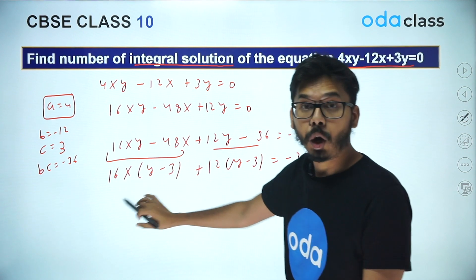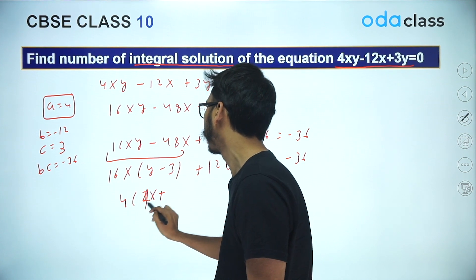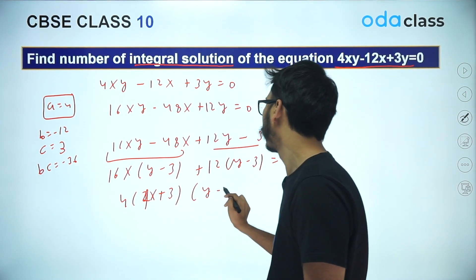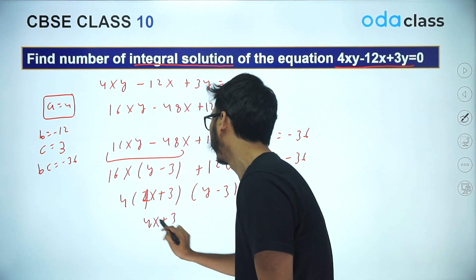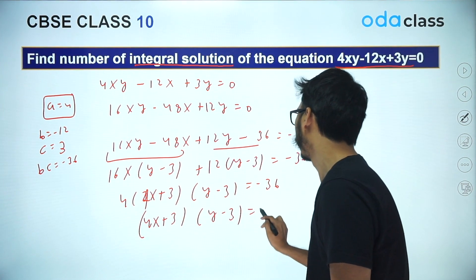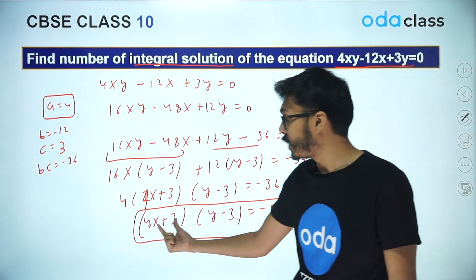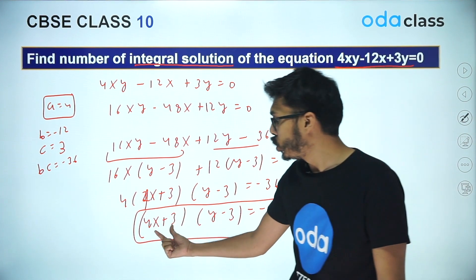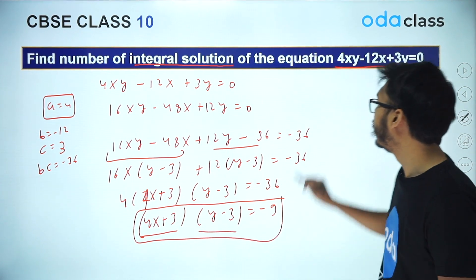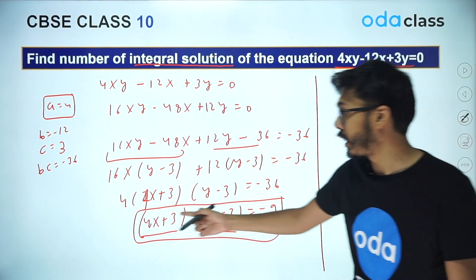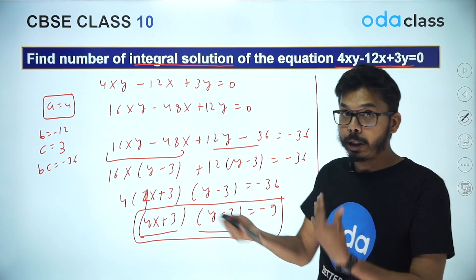From the first two terms you take 16X common and get Y minus 3; from the next two terms you take 12 common and also get Y minus 3. Taking Y minus 3 common from the whole expression gives (4X + 3)(Y − 3) equal to minus 36, which simplifies to (4X + 3)(Y − 3) equal to minus 9. Minus 9 can be split as a product in multiple ways.